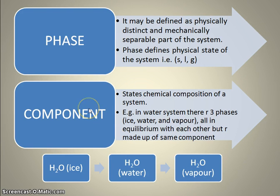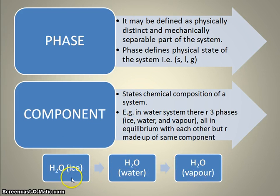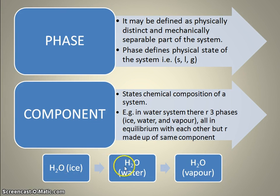Second comes the component. Component defines the chemical composition of a system. For example, in the water system, there are three phases: ice, water, and water vapor. But all three phases — ice, water, and vapor — are composed of H₂O. That means the component of this system is only H₂O.